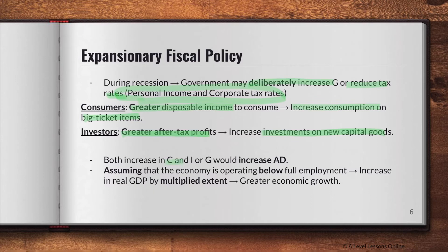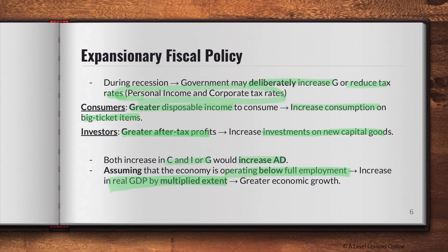An increase in C, I, or G boosts AD overall. Expansionary fiscal policy aims to boost the level of AD so that economic growth can be sustained. Crucially, we must assume the economy is operating below full employment for real GDP to increase by a multiplied extent through the multiplier effect. If the economy is already at full employment, a rise in AD would instead cause the general price level — and hence inflation — to rise.